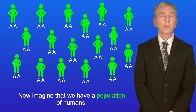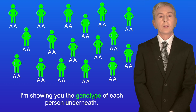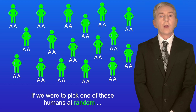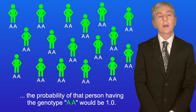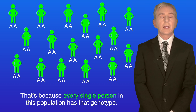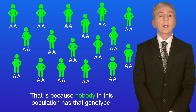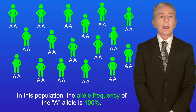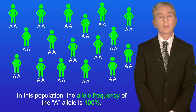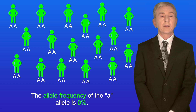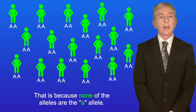Now imagine that we have a population of humans and I'm showing you the genotype of each person underneath. In this population every single human has the genotype capital A capital A. If we were to pick one of these humans at random, the probability of that person having the genotype capital A capital A would be 1.0, because every single person in this population has that genotype. However, the probability of a person having the genotype lowercase a lowercase a is zero, because nobody in this population has that genotype. So in this population the allele frequency of the capital A allele is 100%, and the allele frequency of the lowercase a allele is 0%.